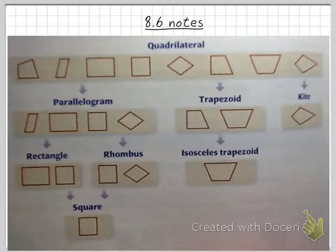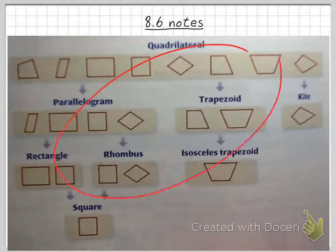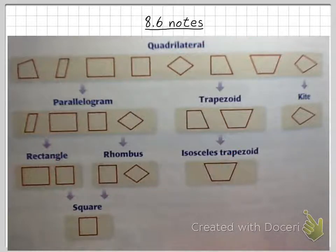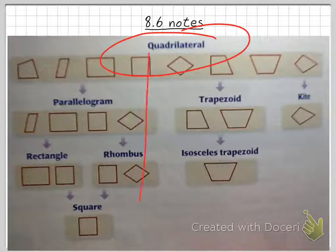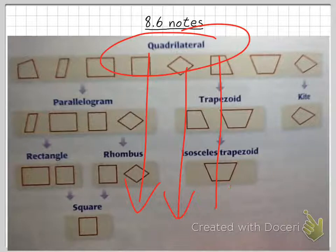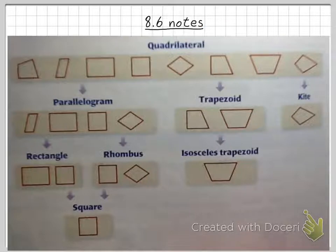This chart identifies the relationships among the special quadrilaterals that we've studied in chapter 8. Analyzing this chart, everything on it is a quadrilateral. As we go from the top to the bottom, we are getting more specific — going from the general on the top down to the more specific on the bottom.